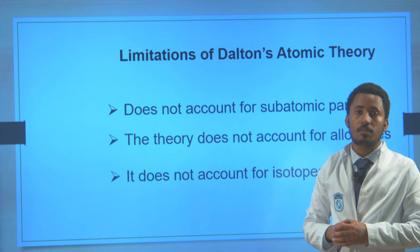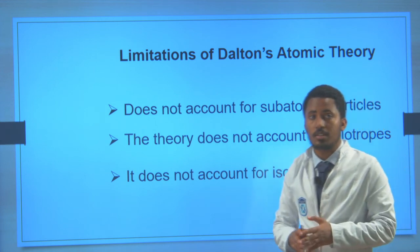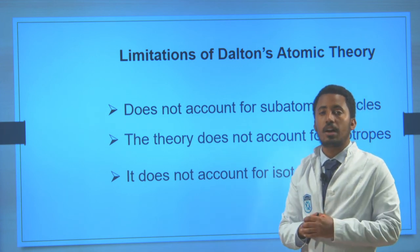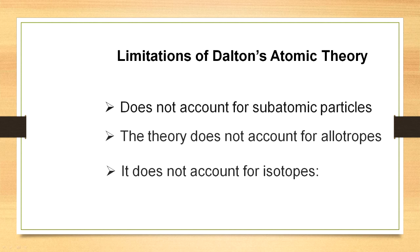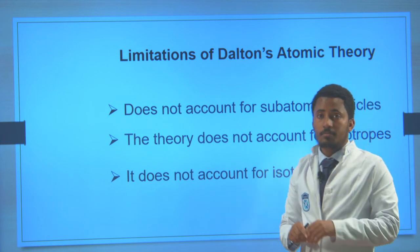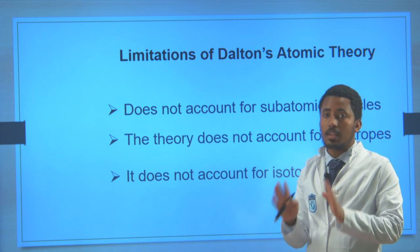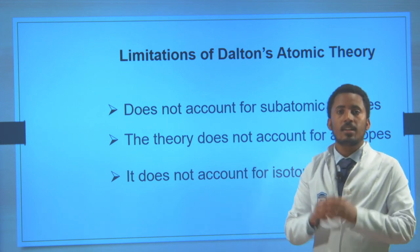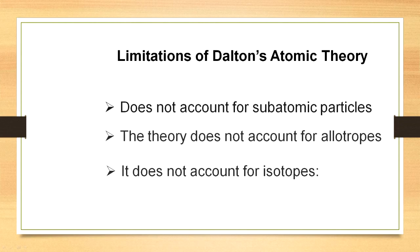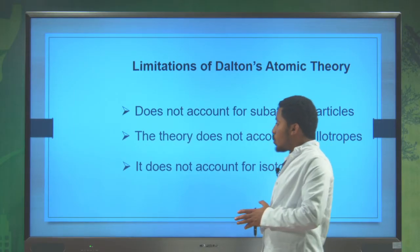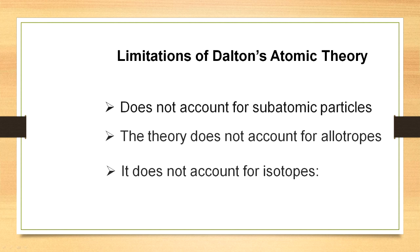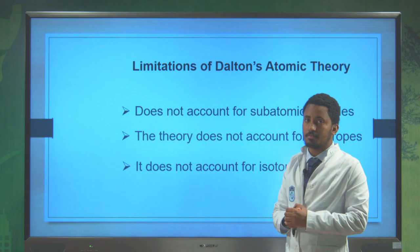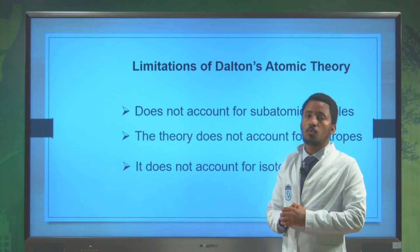Dalton was an ambitious scientist, but in his postulates he had limitations. First, he doesn't account for the subatomic particles because Dalton thought that atom is the smallest particle. Second, he didn't account for allotropes. The third limitation is isotopes. He didn't know isotopes.